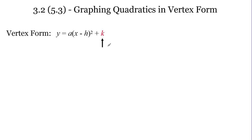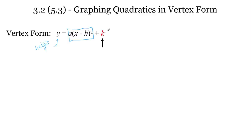The last letter is the k value. If a made it flip, taller, or shorter, and h made it move left or right, what do you think k is going to do? The y value stands for the height of the parabola. After everything else, the last thing we do is add or subtract a k value — so that means the y value is going to either increase or decrease, adjusting the height. The k value is going to adjust the height of the parabola.